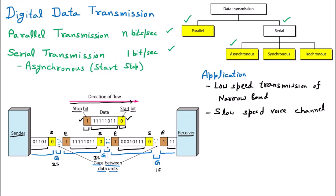The next application is manually operated devices — all devices operated manually where a human is involved. For example, Morse code: when sending Morse code there is a gap afterward, and that gap is variable. That is why all manual devices use asynchronous transmission, because there is no synchronization with speed or time.